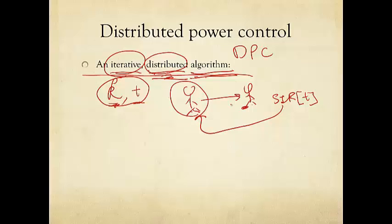Because what you'd be doing is to say, all right, I got a target SIR, gamma i. That's fixed. It doesn't vary over time. And then I got my current received SIR, which varies over time because I changed my power and others changed their powers. I look at their ratio, gamma i divided by SIR at time t.